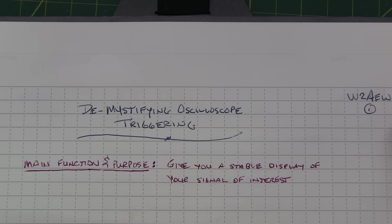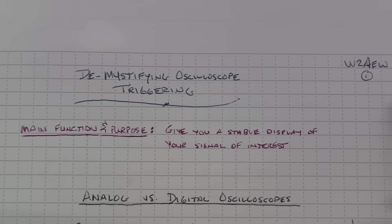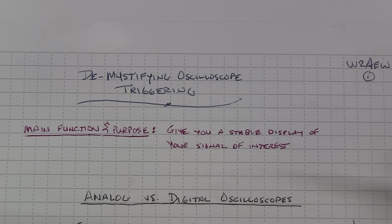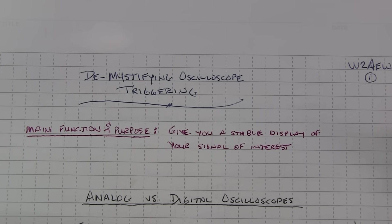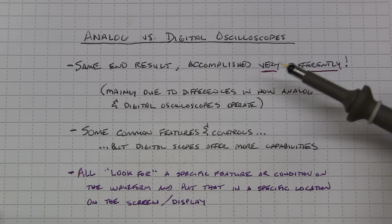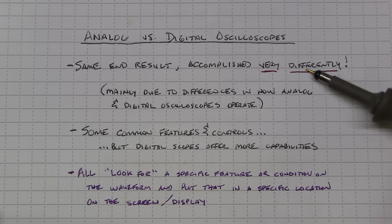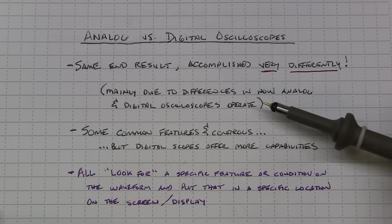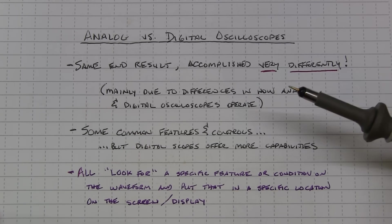Now the confusion often lies is that the analog and digital scope triggering actually have the same end goal, but they go about it in very different ways. Again the idea is to have essentially a stable waveform on your screen but they're accomplished very differently between analog and digital scopes. And that's mainly due to the differences in the way that analog and digital scopes operate.